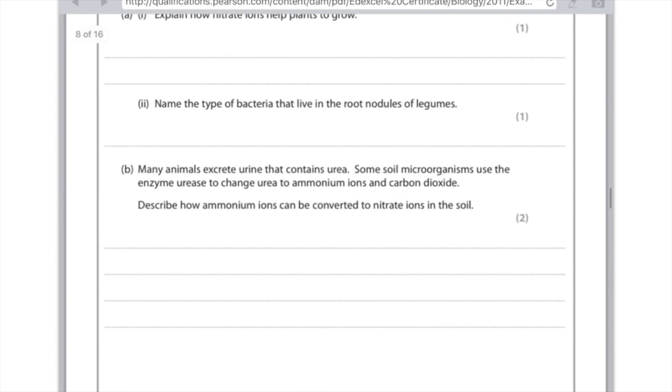B, many animals excrete urine that contains urea. Some soil microorganisms use the enzyme urease to change urea to ammonium ions and carbon dioxide. Describe how ammonium ions can be converted to nitrate ions in the soil.